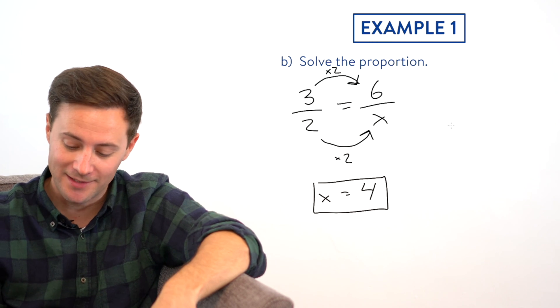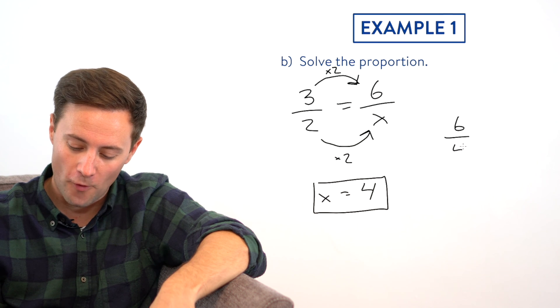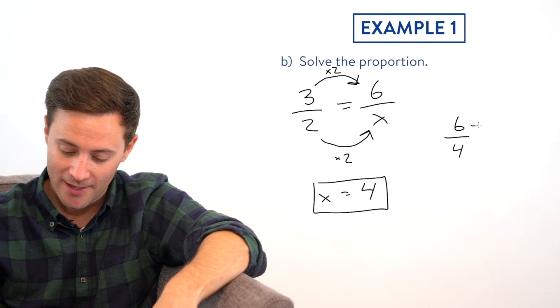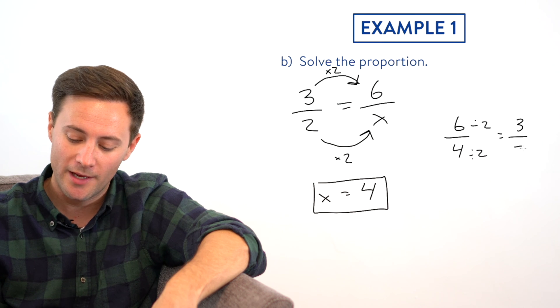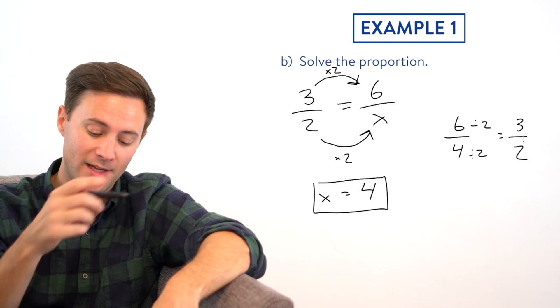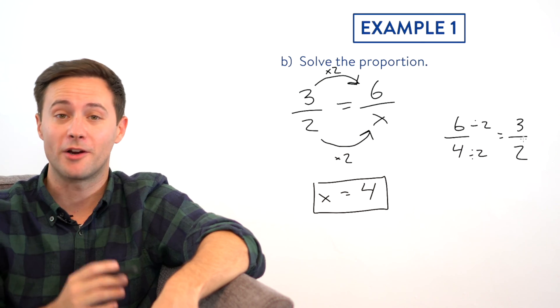And we can check that because six over four, if we simplify, divide by two, divide by two, we would get three halves, which is exactly the other ratio that we started with.